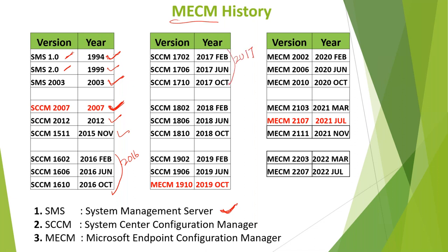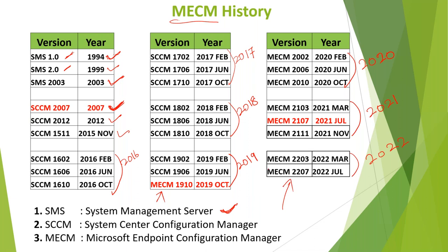Three versions were released in 2019, but from October 19, 2019, they changed the name again from SCCM to MECM. So from October 2019, we call this product MECM — Microsoft Endpoint Configuration Manager. Three versions were released in 2020, three in 2021, and two in 2022. The latest version is MECM 2207, where '22' means 2022 and '07' means July. So from 1994 to 2022, this product has been in the market for almost 28 years.